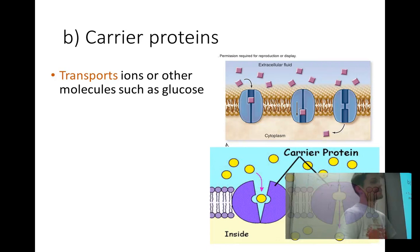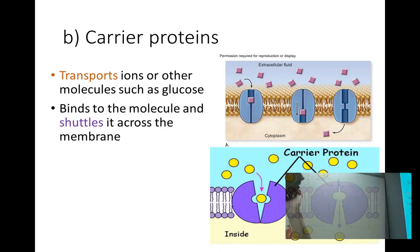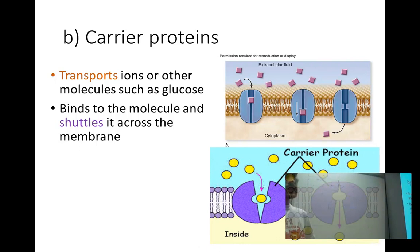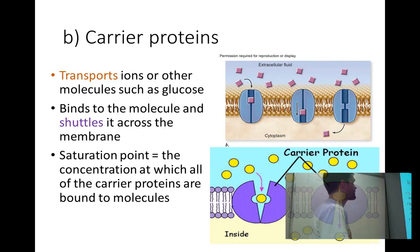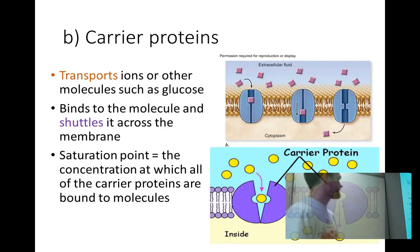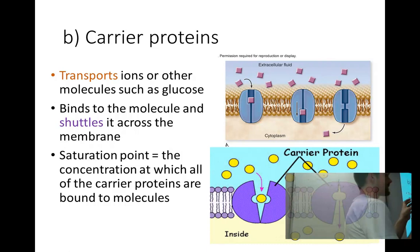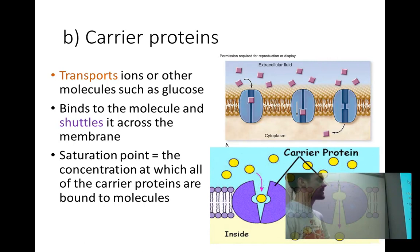Carrier proteins transport ions or other molecules such as glucose through the lipid membrane. This is important across your digestive tract — after you break things down, glucose is shuttled through the membrane into your intestines. However, there is a saturation point: if too much glucose is present or all carrier proteins are being used simultaneously, no more can be absorbed. The transport has reached its full potential.